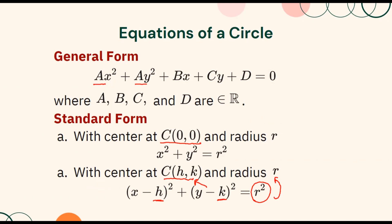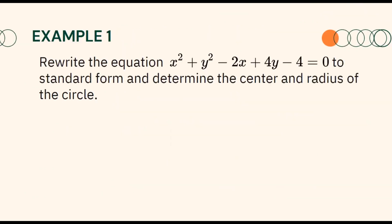And the square root of r squared is the radius of the circle. It is easier to graph and visualize a circle if the equation is given in standard form. In the following examples, we will rewrite equations from general form to standard form and determine the center and radius of a circle. For the first example, we will write the equation x squared plus y squared minus 2x plus 4y minus 4 equals 0 to standard form and determine the center and radius of the circle.